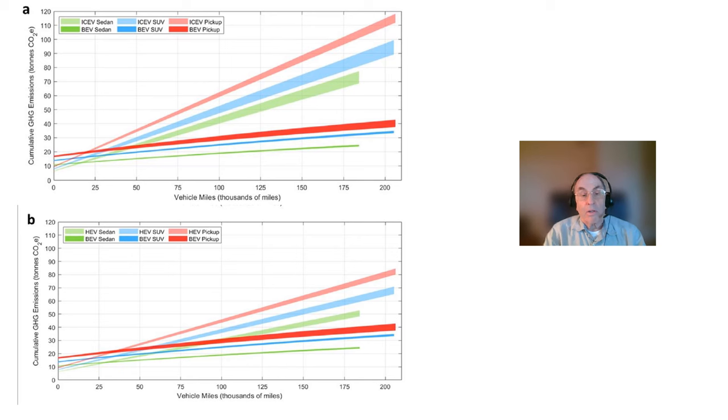These figures are based on averages over all the counties in the contiguous 48 states. The upper figure compares the total greenhouse gas emissions from battery electric vehicles, the dark lines, to those from internal combustion vehicles, light lines, for sedans, SUVs, and pickup trucks as a function of the total number of miles driven. The results are quite remarkable.